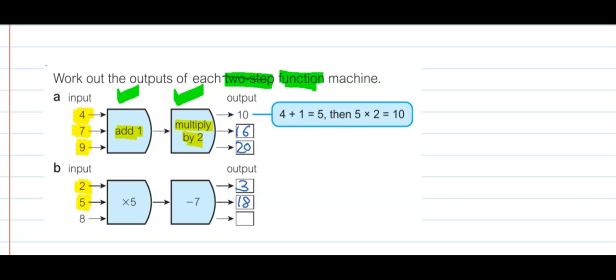And for the last one, the input is 8. 8 times 5 is 40, and 40 take away 7 is 33.